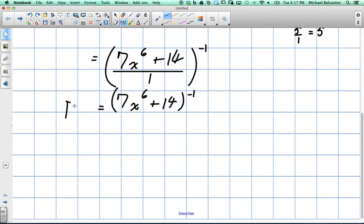So now I'm working with 7x to the power of 6 plus 14 to the power of negative 1. So I've kind of changed this question, and I think it was p(x) here. So now this is a chain rule.